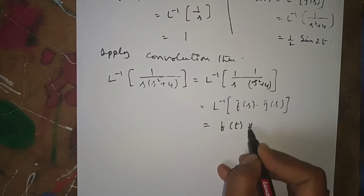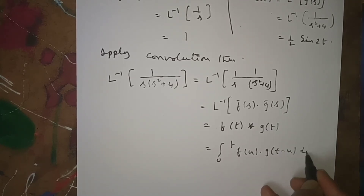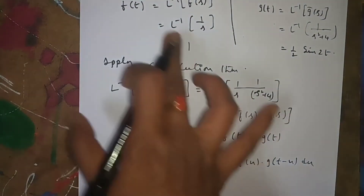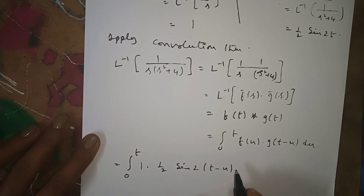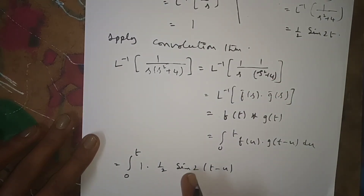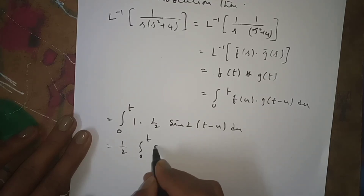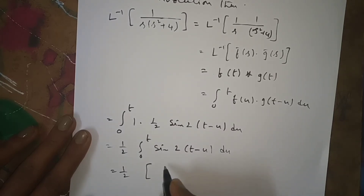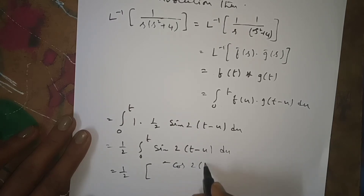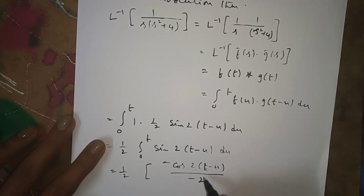Using convolution theorem: L inverse of 1/s into 1/(s²+4) equals f(t) star g(t) = integral from 0 to t of f(u) into g(t minus u) du. Here f(u) = 1 and g(t minus u) = (1/2) sin 2(t minus u). So the integral becomes (1/2) times the integral from 0 to t of sin 2(t minus u) du.